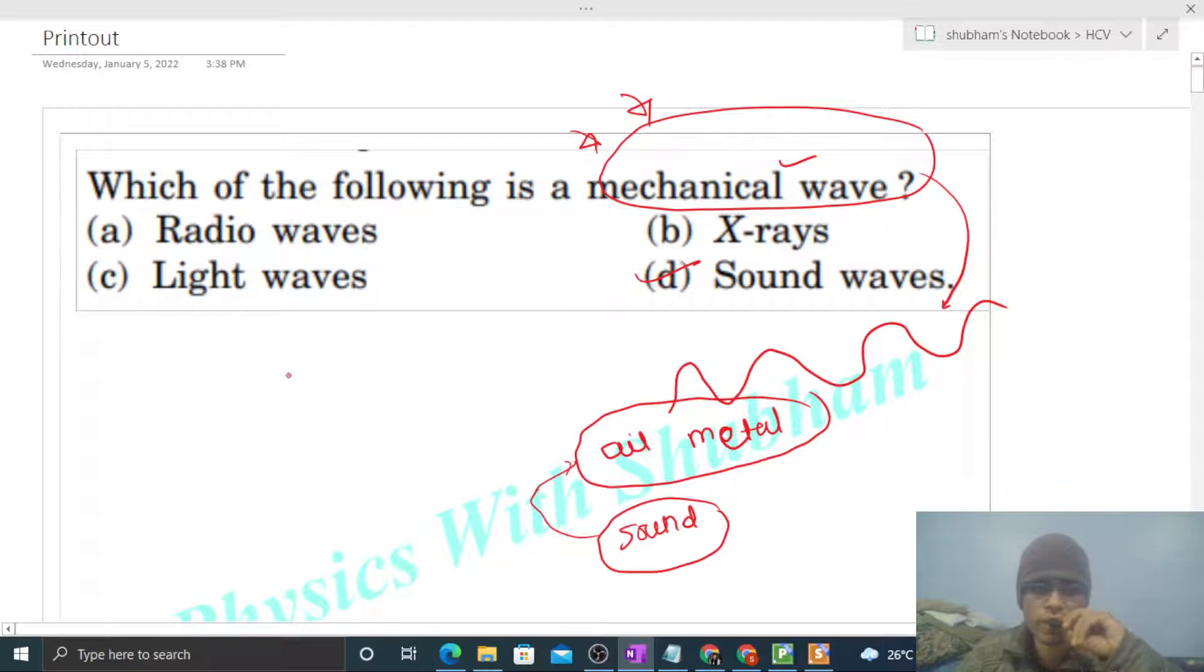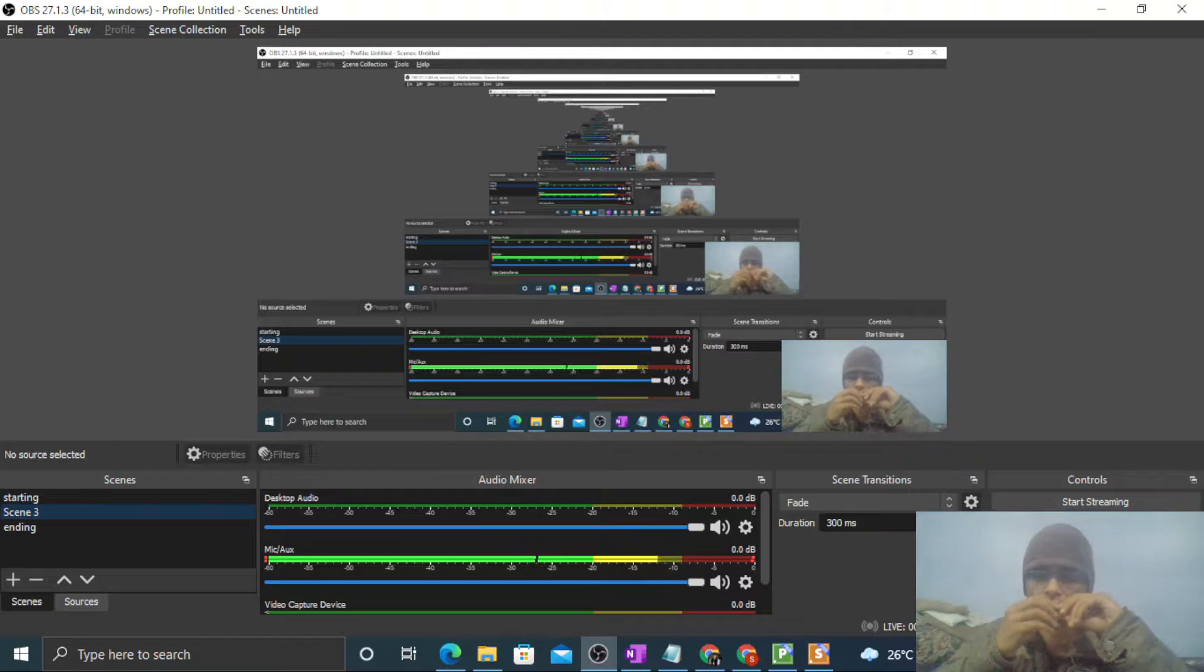And other type of wave is electromagnetic wave, just like light waves. Wo vacuum me bhi travel kar sakte hai. So I think you already know these things. Let me know if you still have any confusion. Okay, let's keep working hard. Best of luck, bye.